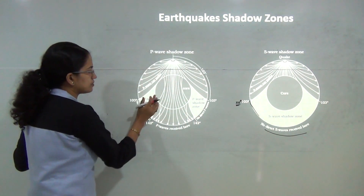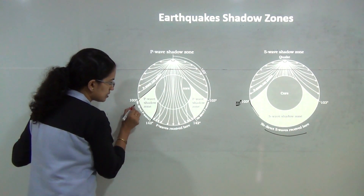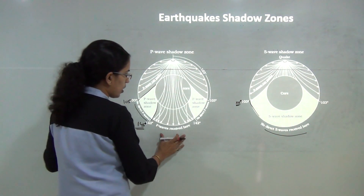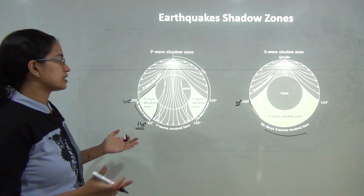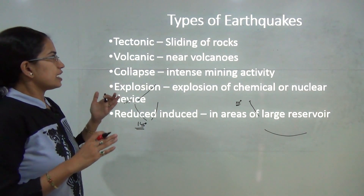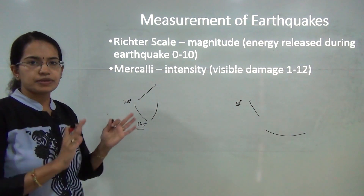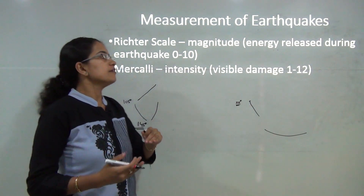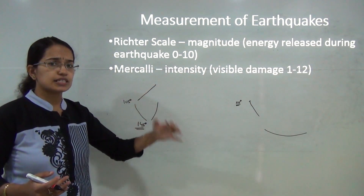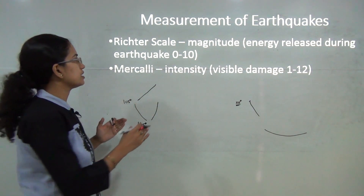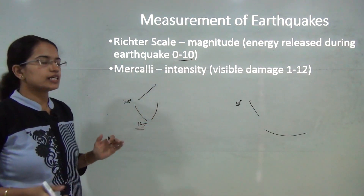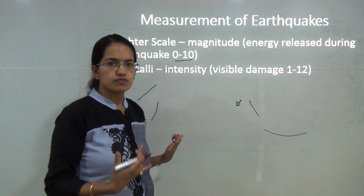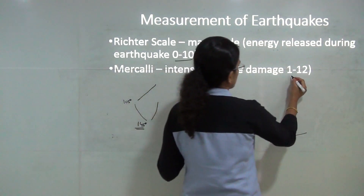P waves are unable to penetrate the region between 105 to 145 degrees, creating a shadow zone. When measuring earthquakes, there are two key concepts: magnitude and intensity. Magnitude is the amount of energy released from the interior of the earth, measured on the Richter scale from 0 to 10. Intensity refers to the visible changes caused by the earthquake and is measured on the Mercalli scale from 1 to 12.